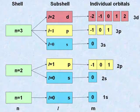In the shell where N equals 3, the D subshell has five values for M. Hence, there are five D orbitals.